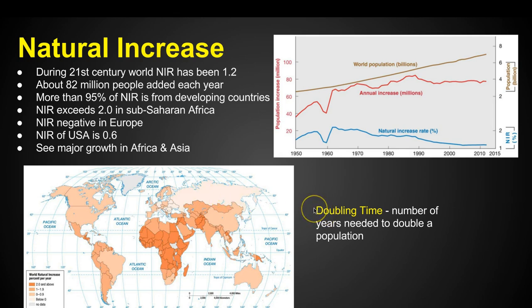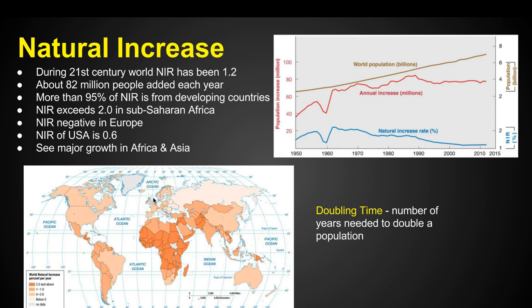Doubling time is the number of years needed to double a population. If you've got a bunch of people having babies and living a long time, the doubling time is not going to be very long because the population doubles very quickly. But if you're up in Scandinavia where people are not really having babies because the population is developed and people are at work and in school, then it's going to take a long time to reach your doubling time.